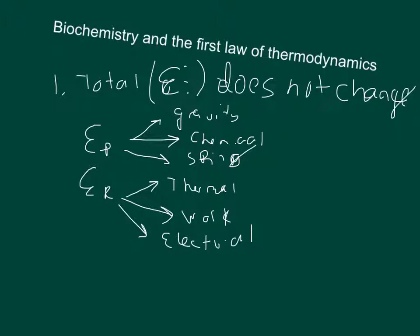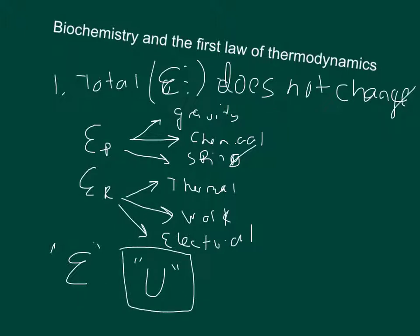A lot of times the total energy is defined as internal energy, symbolized as E or EI. Sometimes in physics and chemistry, internal energy is symbolized as E, and other times as U. Because the biochemistry textbook I'm using uses E, I'll continue to use that. However, realize that physics textbooks typically use U for internal energy.